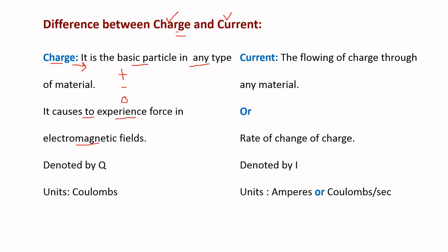Positive charges are protons, negative charges are electrons, and zero charges are neutrons. Coming to current — the flowing of charge through any material is known as current. It is also defined as the rate of change of charge, expressed as dq/dt. This is the formula for current.